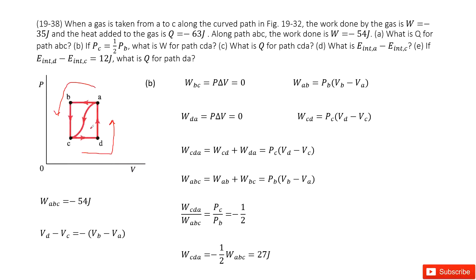So we can write the equations for work done by A-B-C and work done by C-D-A together. A-B-C includes two parts: A-B and B-C. For A-B, the work is P_B times (V_B minus V_A), because B is the isobaric segment. For B-C, the work done is zero because the volume change is zero.